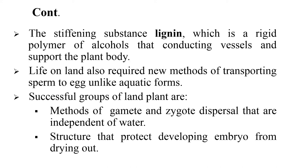Life on land also required new methods of transporting sperm to egg. Unlike aquatic forms, a successful group of land plants developed methods of gamete and zygote dispersal that are independent of water. Another key structure protects the developing embryo from drying out.